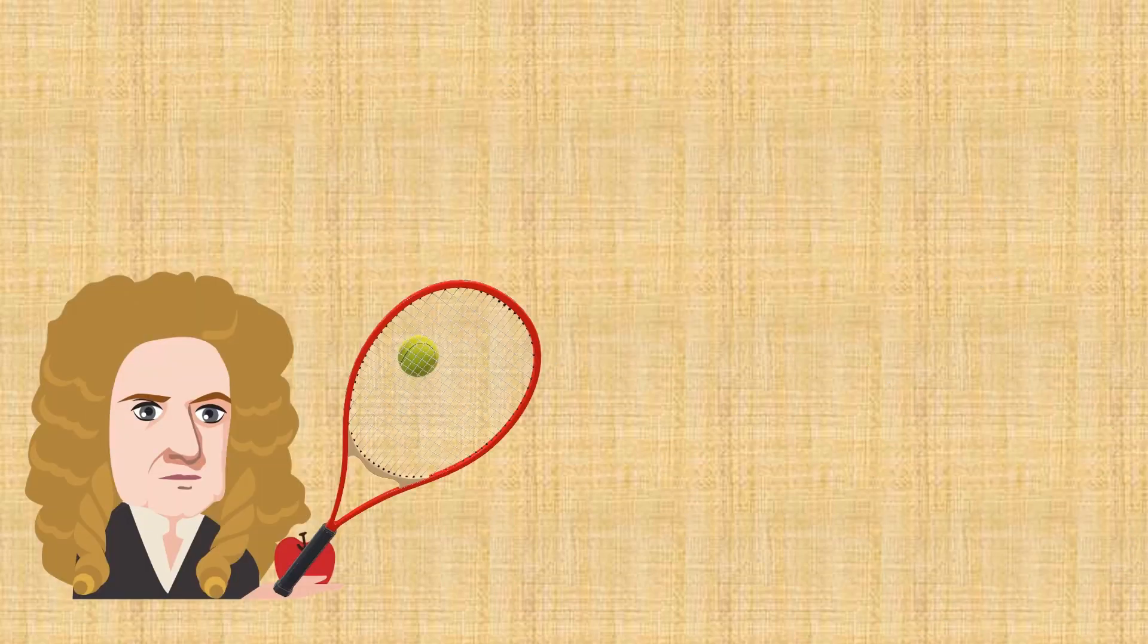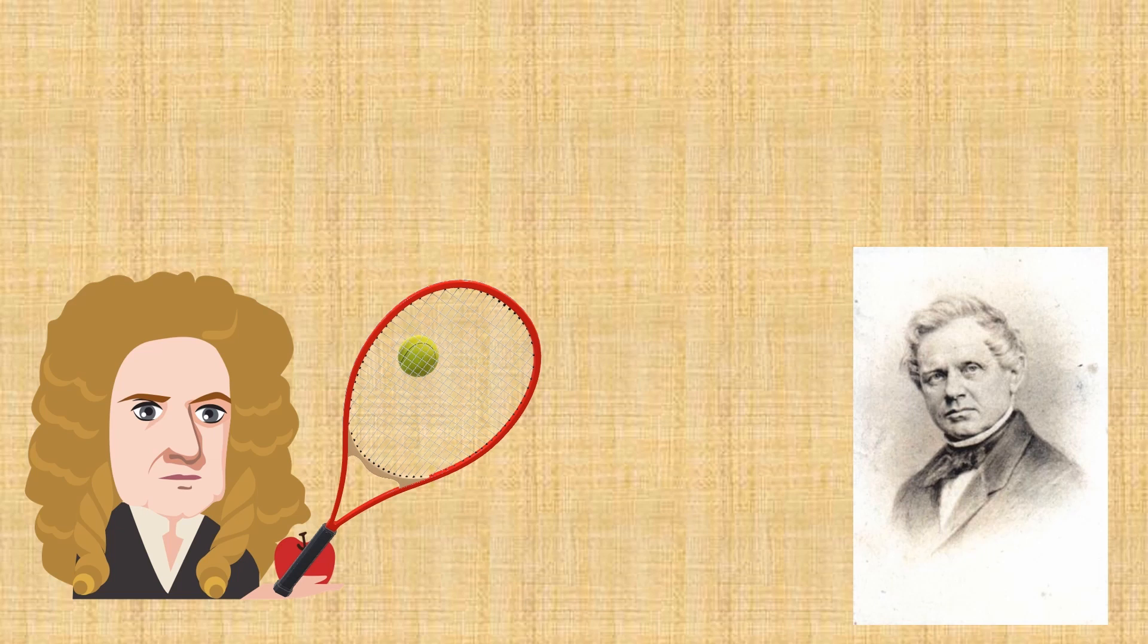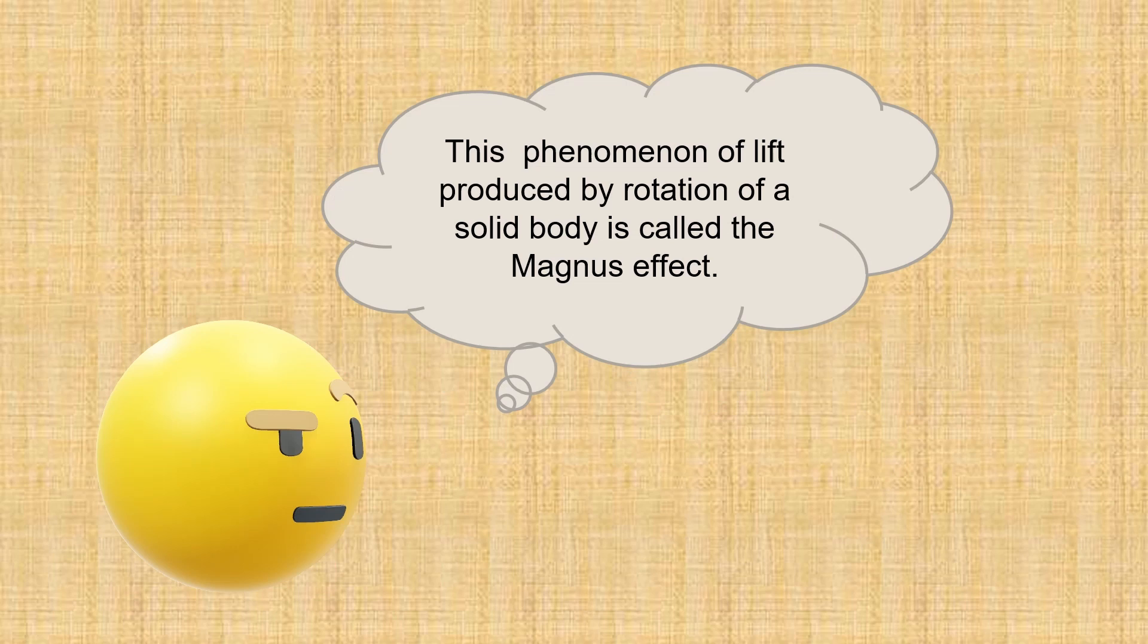Magnus effect, first documented by Sir Isaac Newton in 1670 while playing a game of tennis. The effect is named after the German physicist Heinrich Gustav Magnus, 1852, as he made early studies of the lift on rotating bodies. This phenomenon of lift produced by rotation of a solid body is called the Magnus effect.